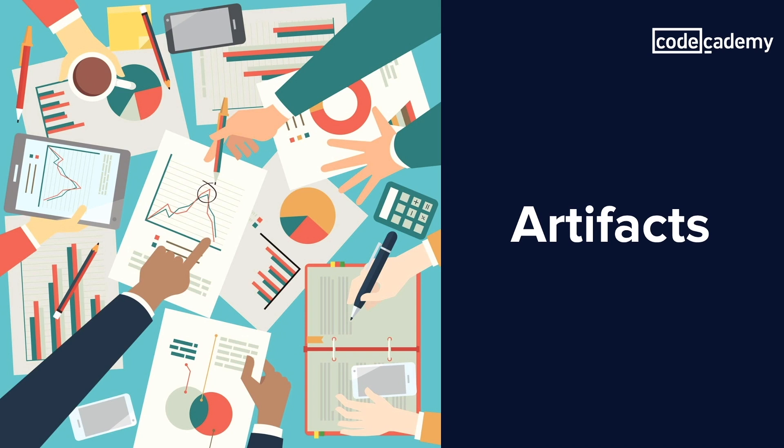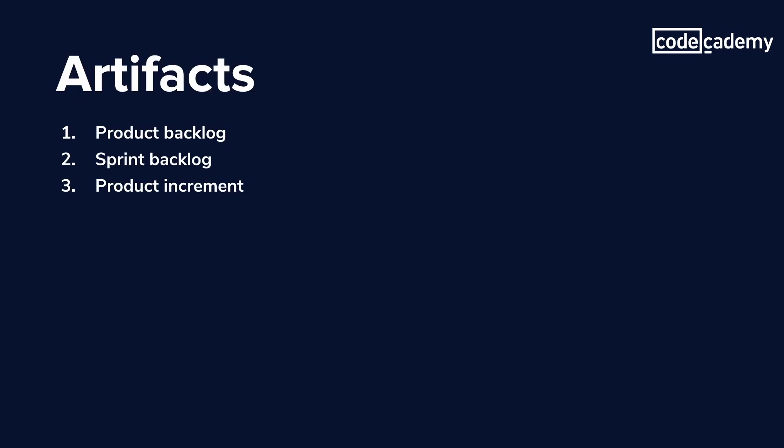So we've covered roles in Scrum. Now there's a notion of an artifact. These are the last few definitions we're going to go over and then we'll see how they all tie in together. You can think of an artifact as anything that can represent a team's work and its progress towards their goals.